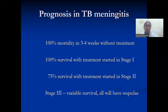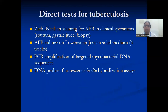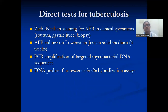Prognosis of TB meningitis: 100% mortality without treatment. Stage 1 — 100% survive. Stage 2 — 75% good prognosis. Stage 3 — variable and all have sequelae. Direct tests for tuberculosis include Ziehl-Neelsen staining for AFB, AFB culture on LJ medium for 4 weeks, PCR amplification of targeted mycobacterial DNA sequences, and DNA probes such as fluorescent in situ hybridization.